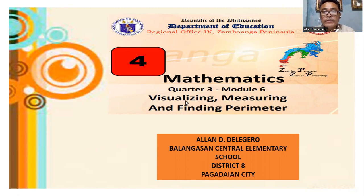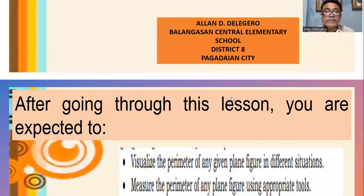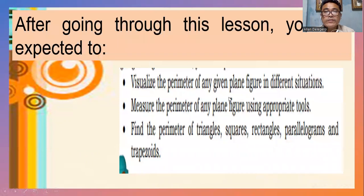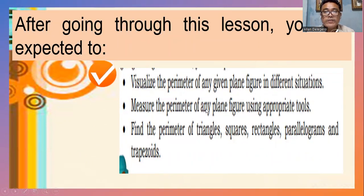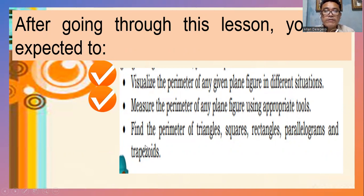Children, we are now on Quarter 3, Module 6. After going through this lesson, you are expected to visualize the perimeter of any given plane figure in different situations, measure the perimeter of any plane figure using appropriate tools, and find the perimeter of triangles, squares, rectangles, parallelograms, and trapezoids.